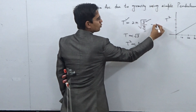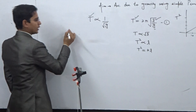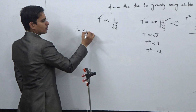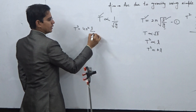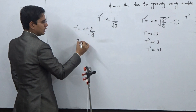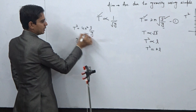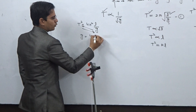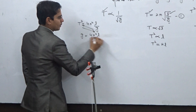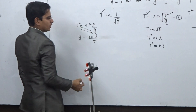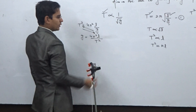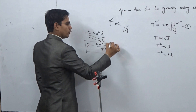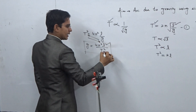Squaring both sides gives equation 1: T² = 4π²L/g. Rearranging, g = 4π²L/T². So what is required for calculating the value of g? We need the value of L and the value of T.